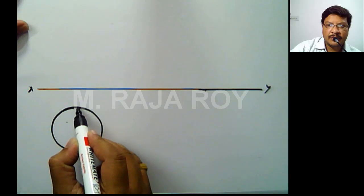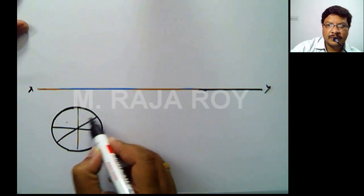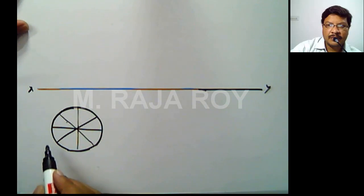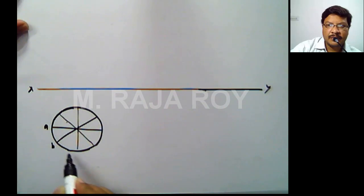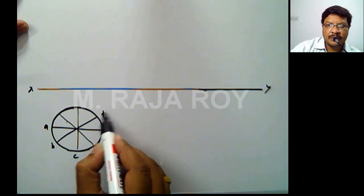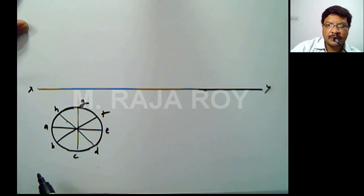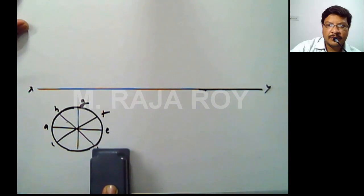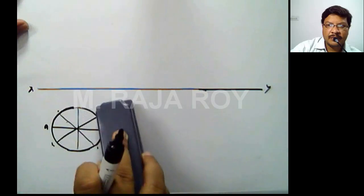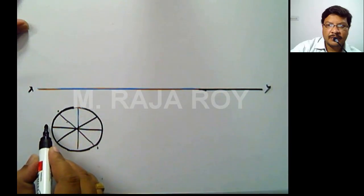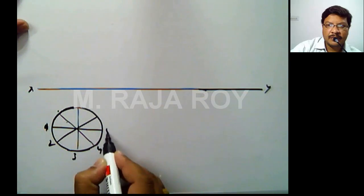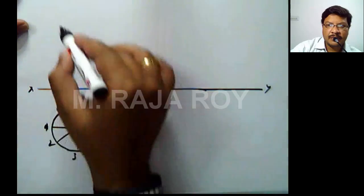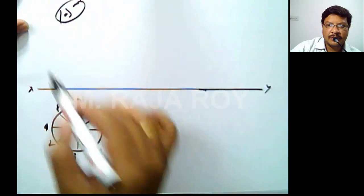Next step is to divide this circle into 8 parts, labeling them 1, 2, 3, 4, 5, 6, 7, 8. You can also use letters — that is your choice — but numbers are somewhat easier. The diameter 1-5 is my reference diameter.